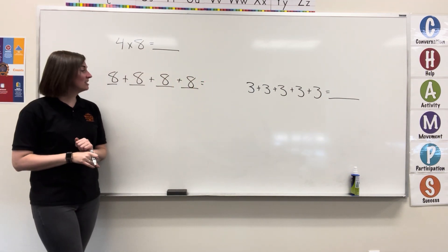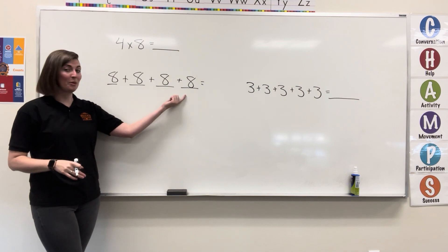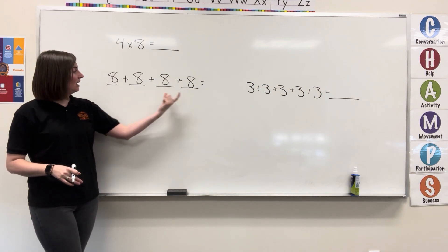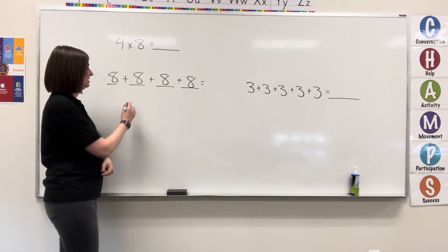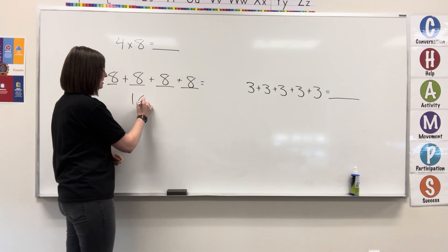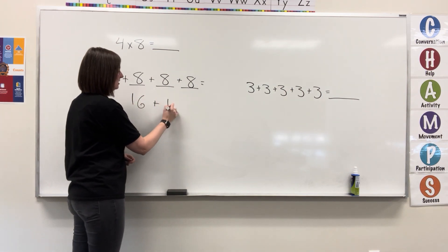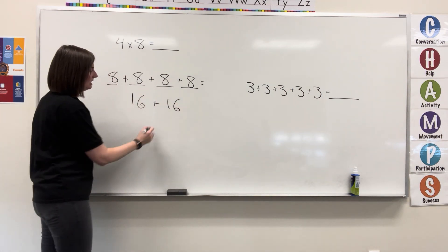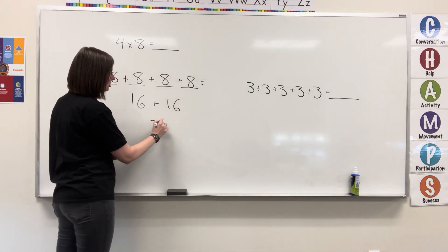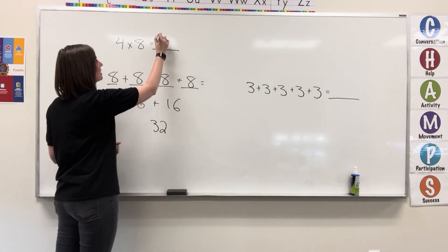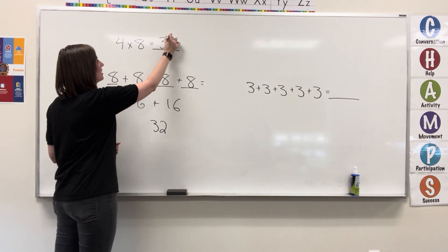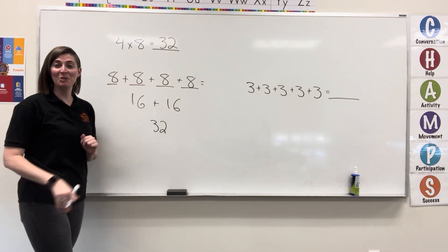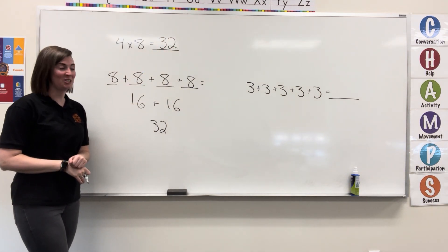Then you can just add up your 8s. 8 plus 8 is 16, and 8 plus 8 is 16. 16 plus 16 gets me 32. So, that's our solution to the multiplication equation.